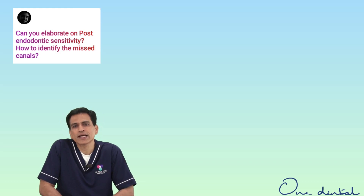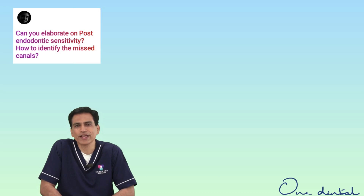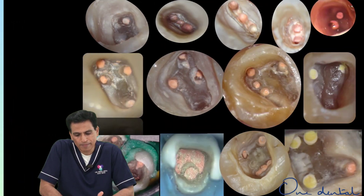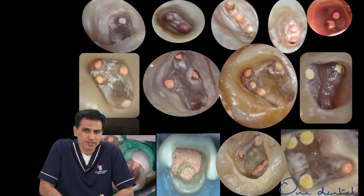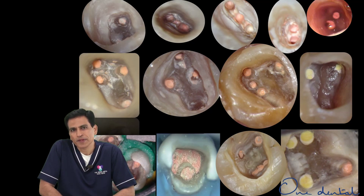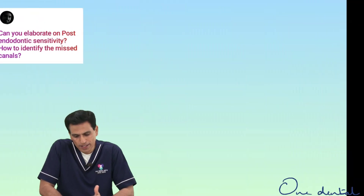To identify missed canals, first you need to understand the tooth involved. Many teeth, at least in our part of the world, have a lot of variations. So understand the literature and the knowledge behind each tooth — that's very important. For example, MB2 having an extra canal is quite common nowadays, or lower incisors having an additional lingual canal, or premolar variations, a C-shape, or a radix — these are all quite common. Start expecting and accepting these variations.